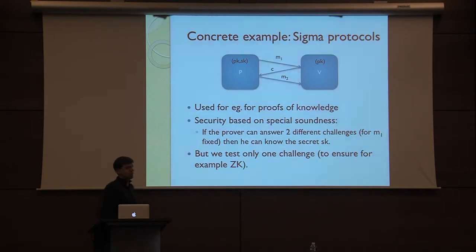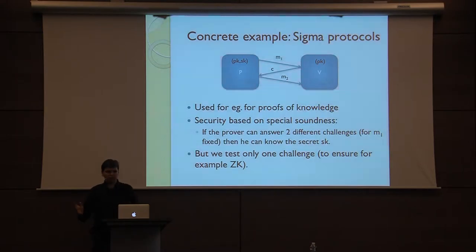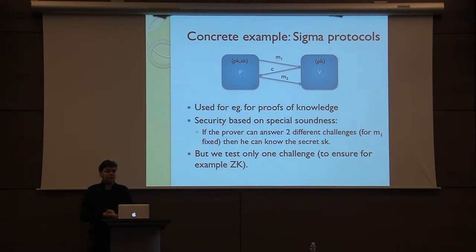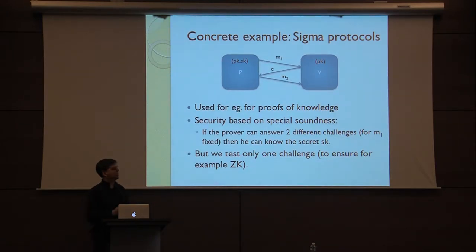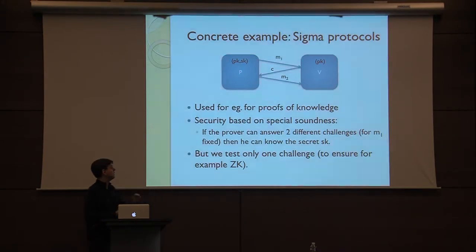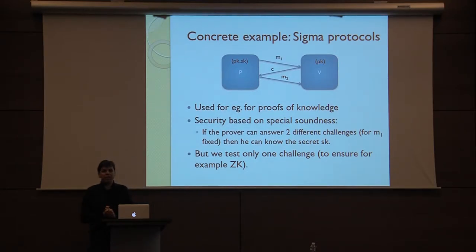Before being too vague, I'll start from one simple example and then see from there what are the problems and what solutions we bring in this paper. Suppose any kind of prover-verifier scenario — here I took a sigma protocol. You have a prover that has a public key and a secret key. The verifier only has the public key, and the prover wants to convince the verifier that he knows the secret key without revealing it. So it's a proof of knowledge, a sigma protocol — just a first message, a challenge, and a second message. In many cases the security of those protocols is based on a property called special soundness: if the prover can answer two different challenges, then this is a proof that he knows the secret key.